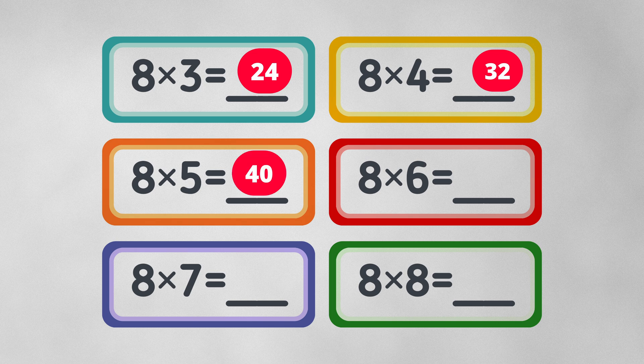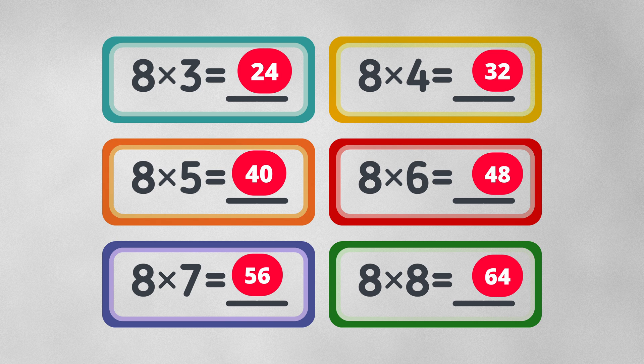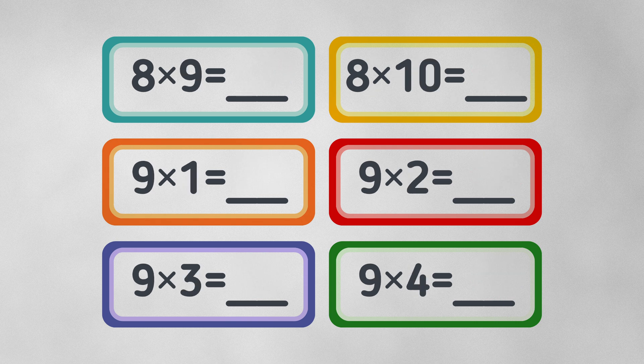Eight times six equals forty-eight. Eight times seven equals fifty-six. Eight times eight equals sixty-four. Eight times nine equals seventy-two. Eight times ten equals eighty.